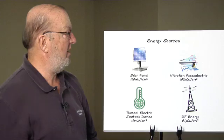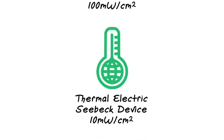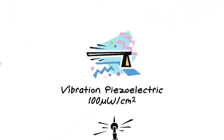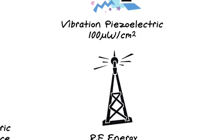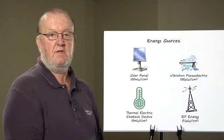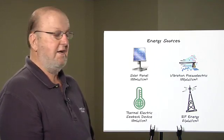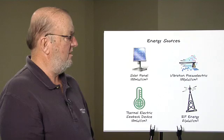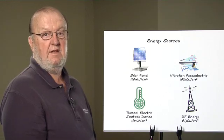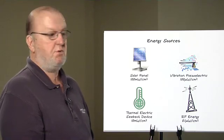An energy source could be from solar, a heat differential, vibration, or RF energy. Solar energy has been around for many years and we've been using that to power our handheld electronics. In direct sunlight we can get 100 milliwatts per square centimeter and in indirect sunlight we can get approximately 10 milliwatts per square centimeter.